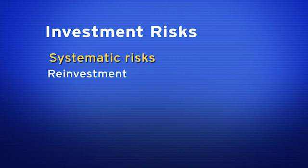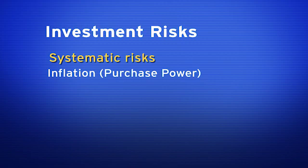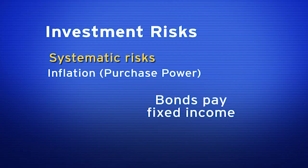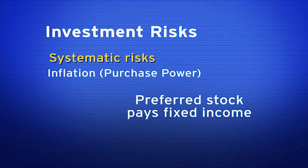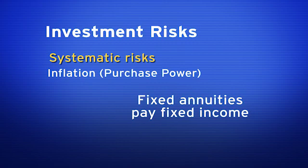The last systematic risk is inflation risk, also known as purchasing power risk. Anytime I buy a fixed income product, I run inflation risk. Bonds pay fixed income — inflation risk. Preferred stock pays fixed income — inflation risk. Fixed annuities pay fixed income — inflation risk.